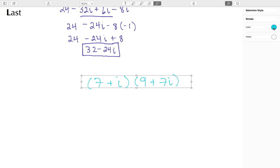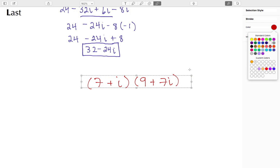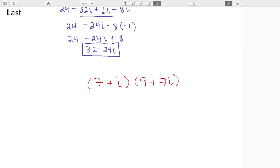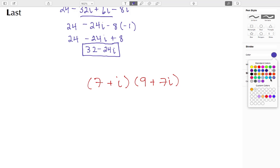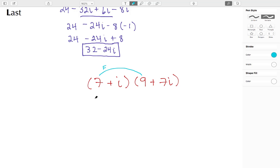All right, so we're here and let me also change the color. Actually, well, that's fine. Keep that red and then we'll change the text, my writing here, back to that bluish color. All right, so F for First, so that's these first two terms. So 7 times 9 to give me 63. And I'm going to do Outer, which are going to be these two terms here. So 7 times 7i to give me a positive 49i.